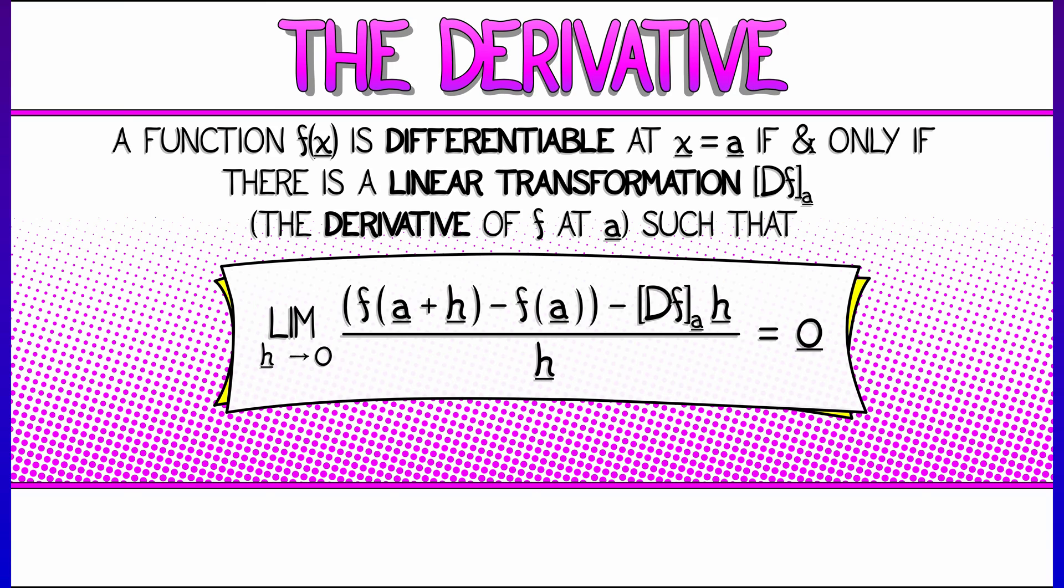Wait a minute. This is a little more complicated because what we need to do is put what this linear transformation does to h up in the numerator, subtract that off from f(a+h) - f(a), and then get zero on the right-hand side.